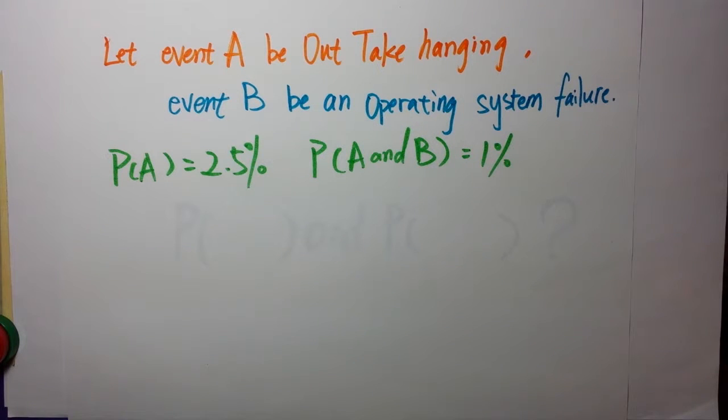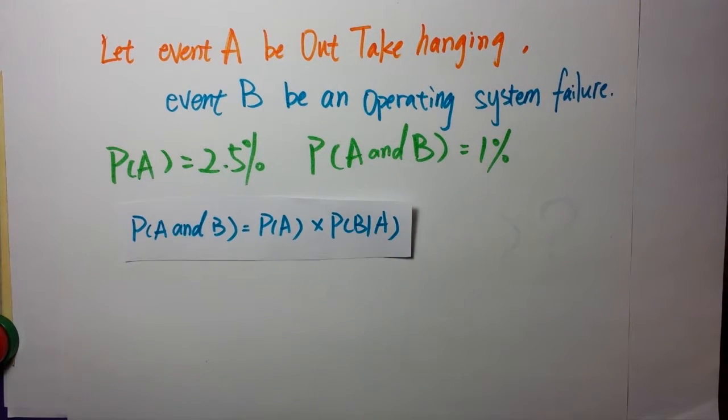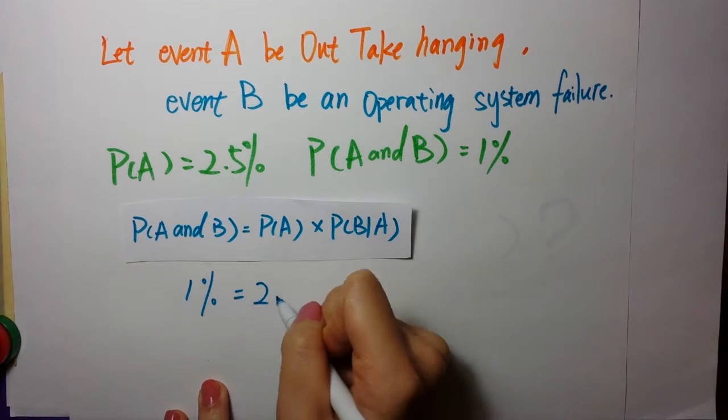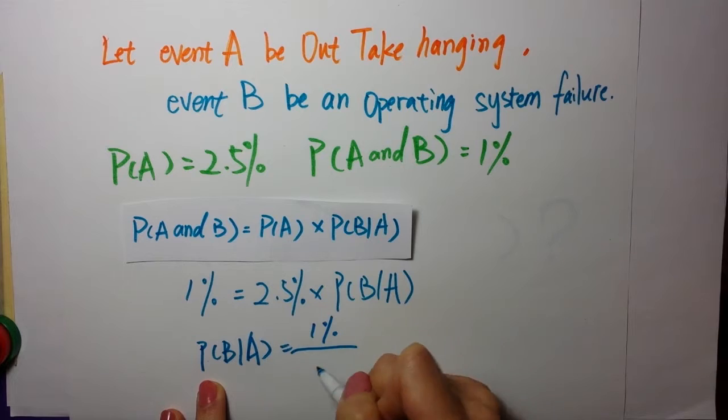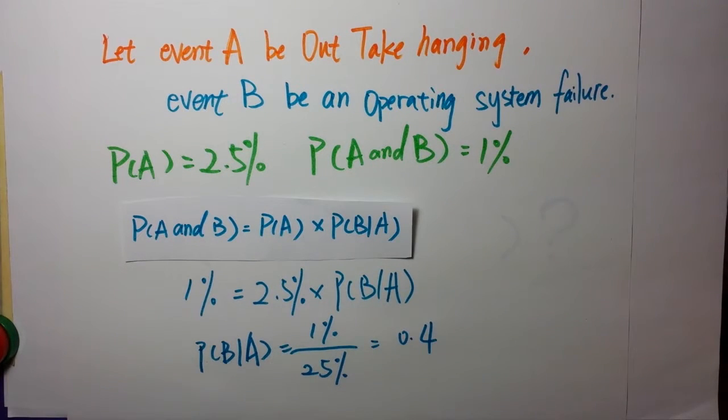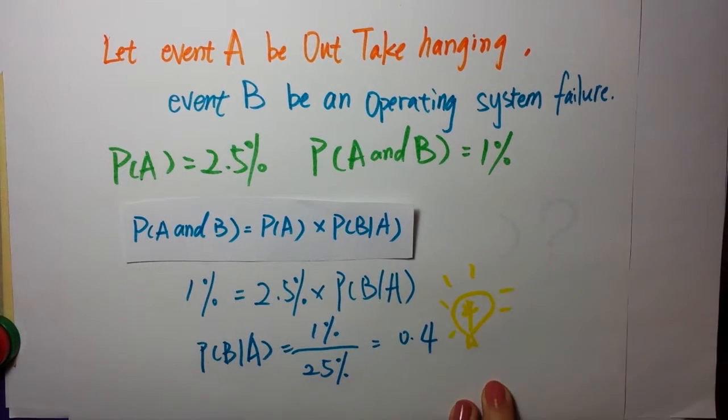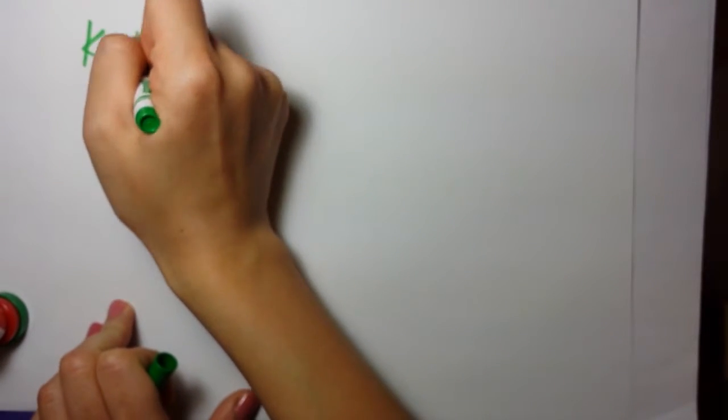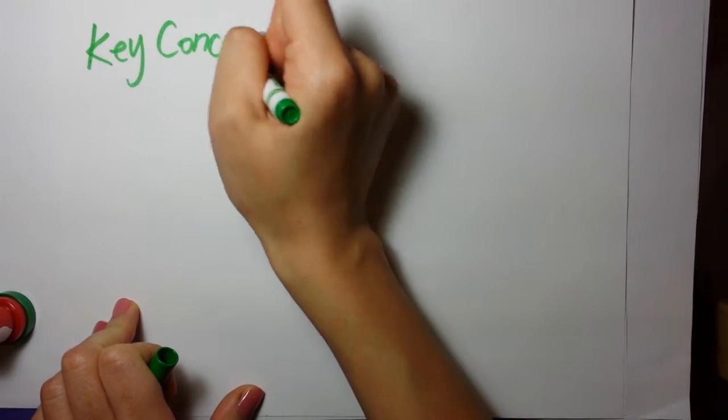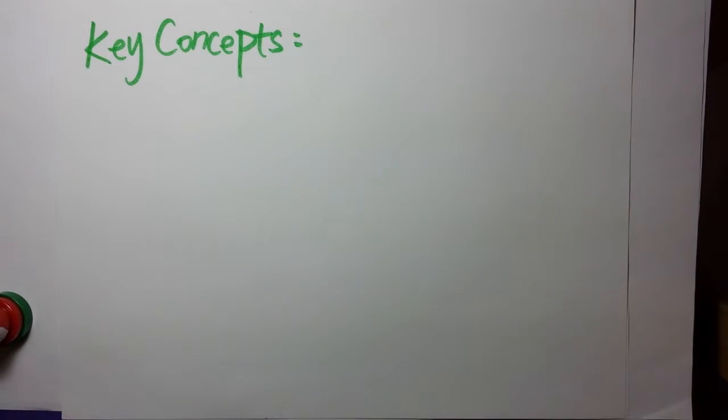The data from the magazine tells you that P(A) is equal to 2.5% and P(A and B) is equal to 1%. Therefore, using the formula P(A and B) equals P(A) times P(B|A), P(B|A) is equal to 1% over 2.5%, which is equal to 0.4. So there is a 40% chance that the operating system will crash when Outlook is hanging.